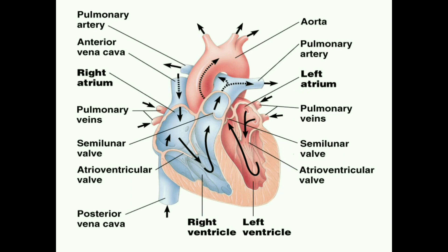Next is the vena cava — a tube on the far right on the top of the heart; the vena cava is on the right side at the top of the heart. Next are the valves, which are located in between the ventricle and atrium — between the atrium and ventricle.